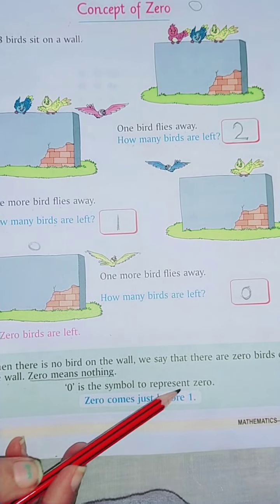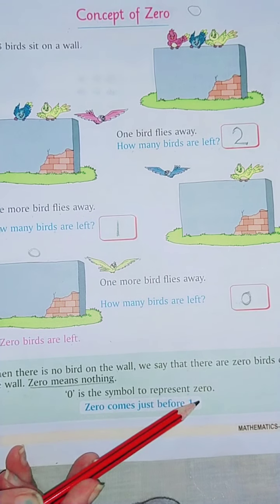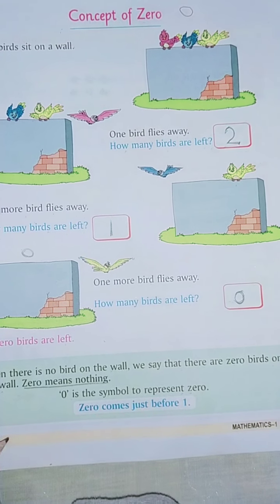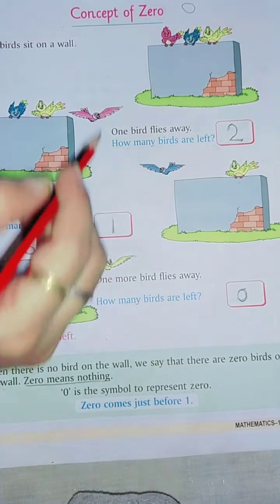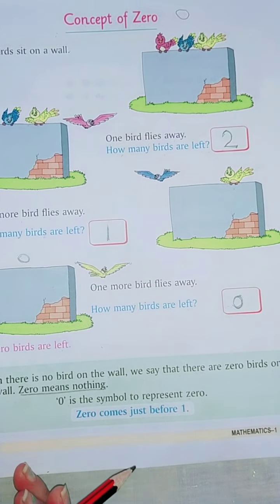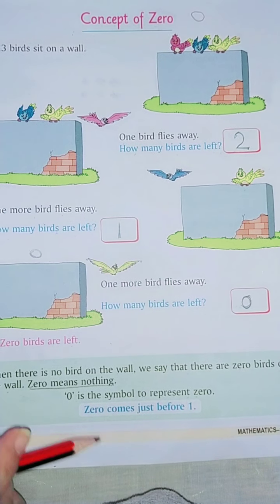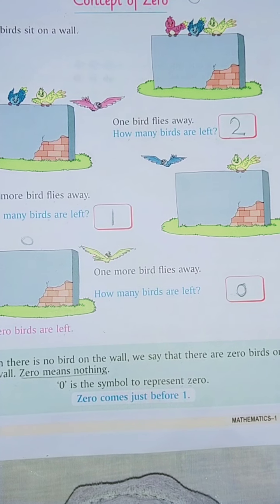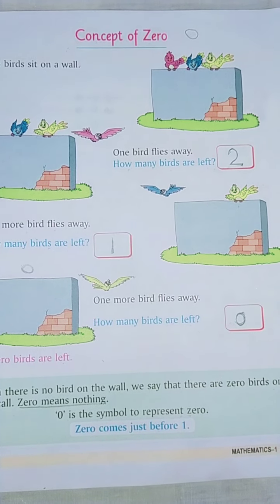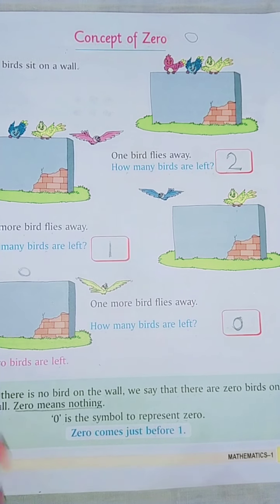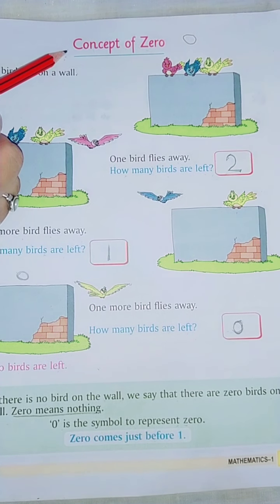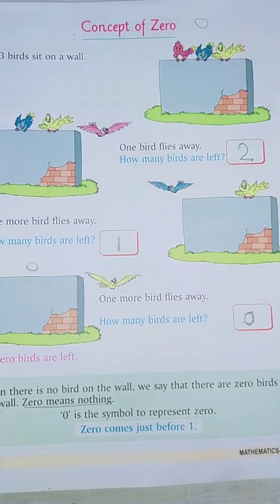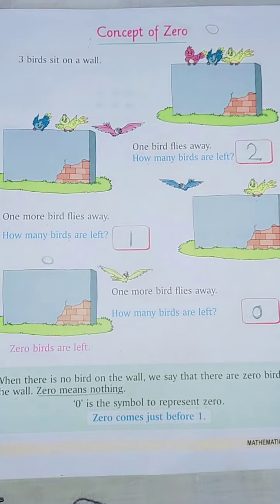So zero birds are left. When there is no bird on the wall, we say that there are zero birds on the wall. Zero means nothing. As I told you, zero means nothing, zero ka matlab kuch bhi nahi. Then also we have to write it. Zero is the symbol to represent zero. Zero bhi ek symbol hai, aapko wohi batana padega. Aap jaise ten likhoge, to aap one ke aage zero lagaoge, then it will be ten. So zero comes just before one. Jab aap counting likhte ho, one, two, three, four, five, to one ke pehle zero aata hai. Understood the concept of zero? So you can do this work in the book. So I will send you the pdf. Okay? Thank you.